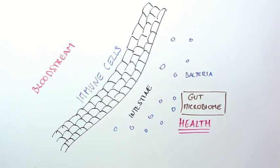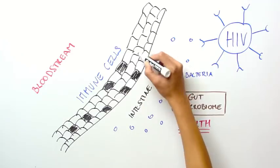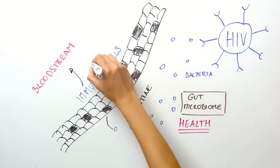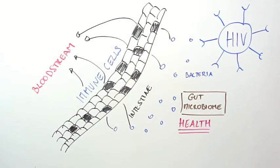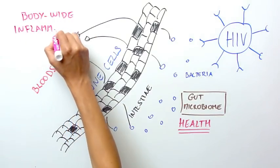So this immune barrier keeps the bacteria in the intestine where they have beneficial roles in our health. But upon HIV infection, this barrier is weakened and harmful substances as well as bacteria of the gut microbiome can enter the blood. Once the bacteria leave the gut and enter the bloodstream, they can travel throughout the body and cause body-wide inflammation, which can be harmful.